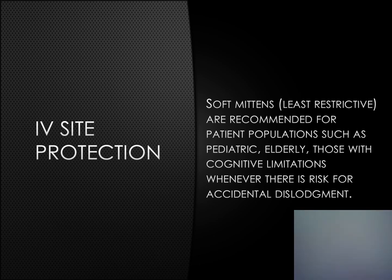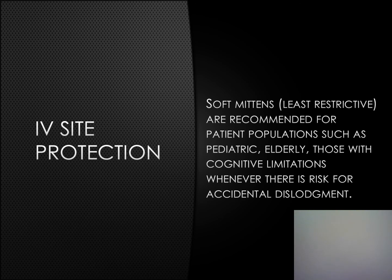IV site protection may be required to prevent accidental dislodgement. Soft mittens are recommended for pediatric clients, older adults, or those with cognitive limitations, and are not considered a restraint. Physical immobilization devices, also known as restraints, may be used to protect vascular access device sites only when absolutely necessary — they should never be routinely implemented and should be avoided whenever possible. When IV site protection devices are in use, document frequent assessment of the skin and the site.